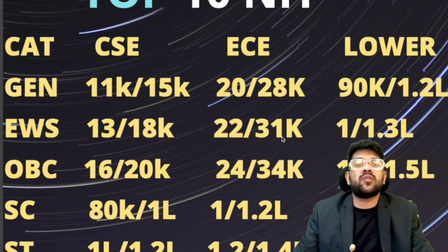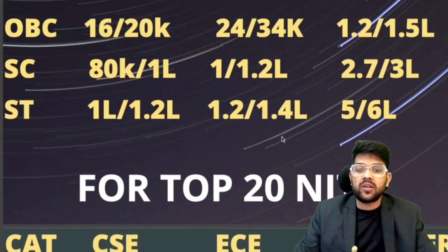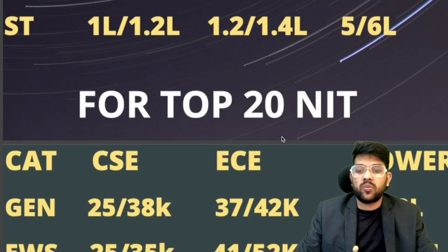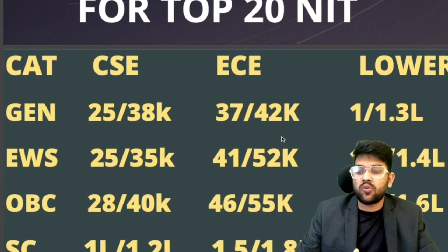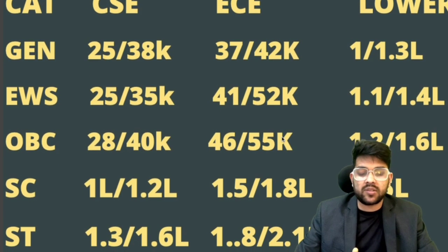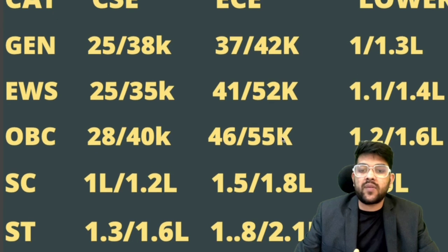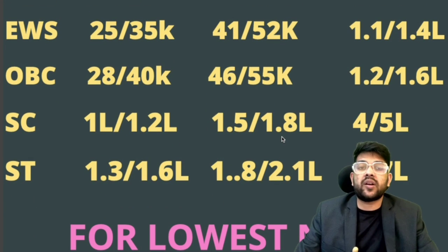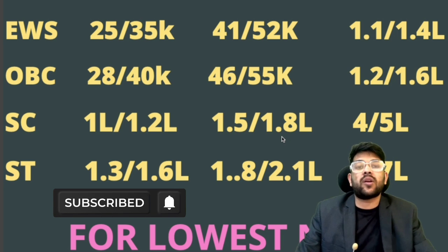For top 20 NIT colleges: General CSE cutoff is 25,000–38,000. For EWS: 30,000–40,000. For OBC: 28,000–40,000. For SC: 1 lakh–1.2 lakh. For ST: 1.3 lakh–1.6 lakh. EC and lower branch data can be checked on-screen. Note that in some cases general category may get a better seat than EWS or OBC due to the seat conversion rule.